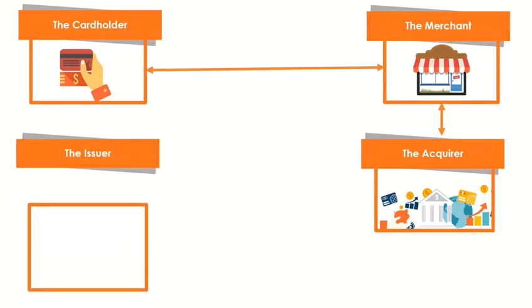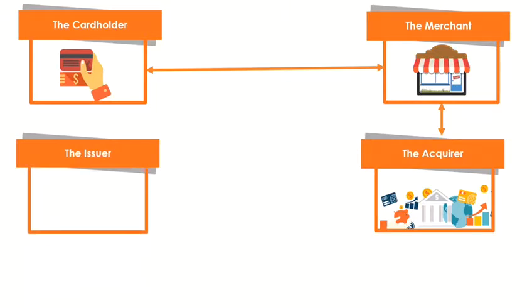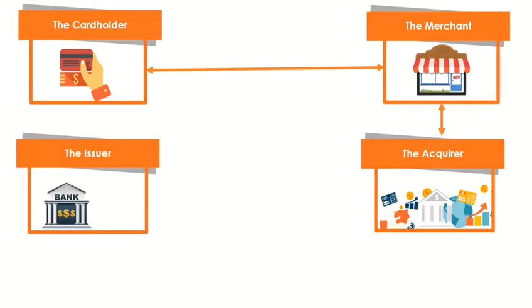The Issuer. The issuer is the bank issuing the credit or debit card. The bank provides an account linked to the card and confirms the transactions made with the card by verifying the card details and the sum present in the account of the cardholder.